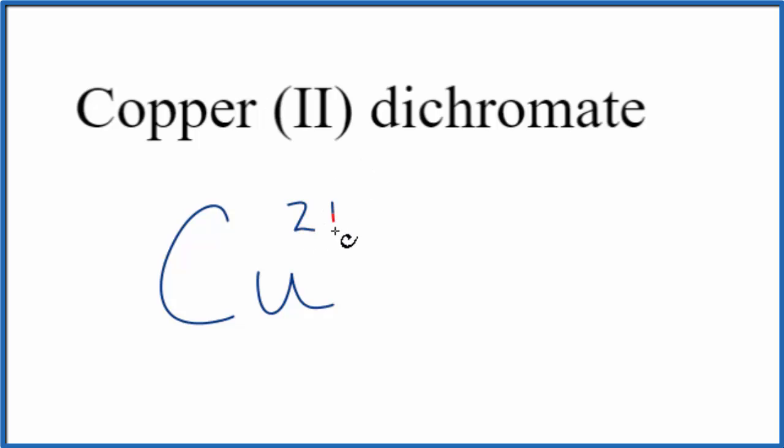And the 2, that means it has a 2+. So since copper is a transition metal, we're told the charge right here in the name. So we have Cu2+.